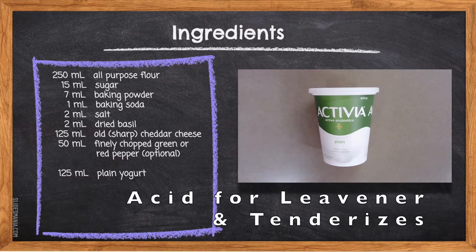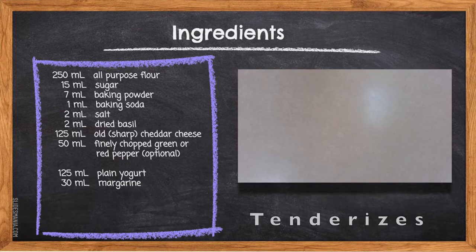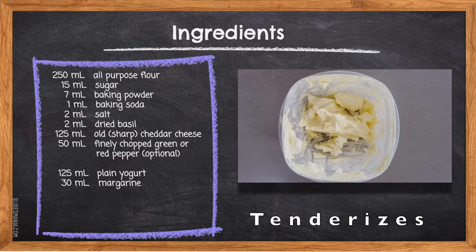125 milliliters plain yogurt — using yogurt allows us to reduce the fat in our muffin. It is also the acid needed to activate our baking soda. Yogurt is high in protein, calcium, vitamins, and live cultures or probiotics, which are known to enhance your digestive system. 30 milliliters of margarine — this has a tenderizing effect as it interferes with the development of the gluten, making our muffins soft.